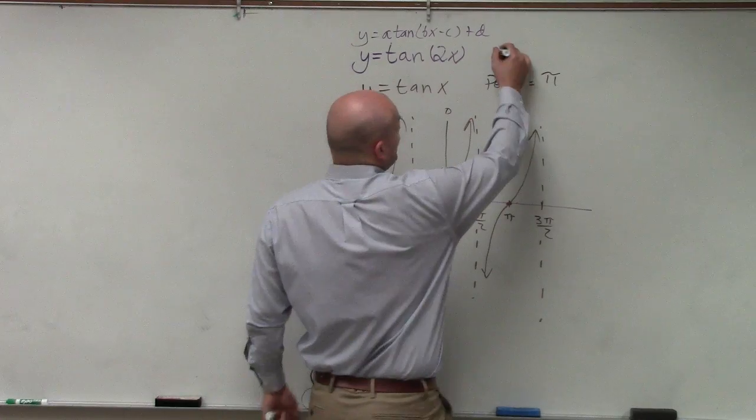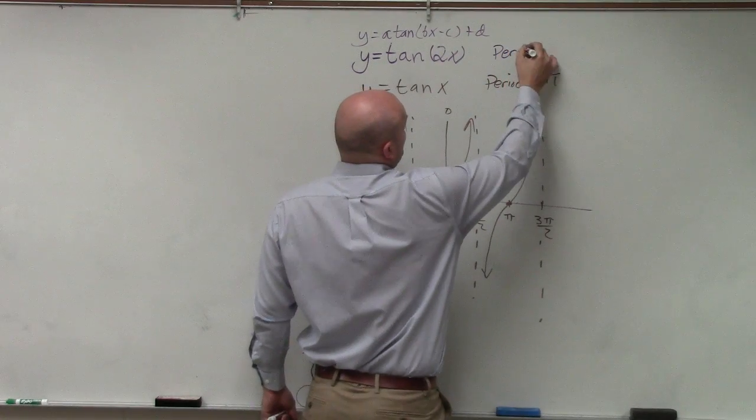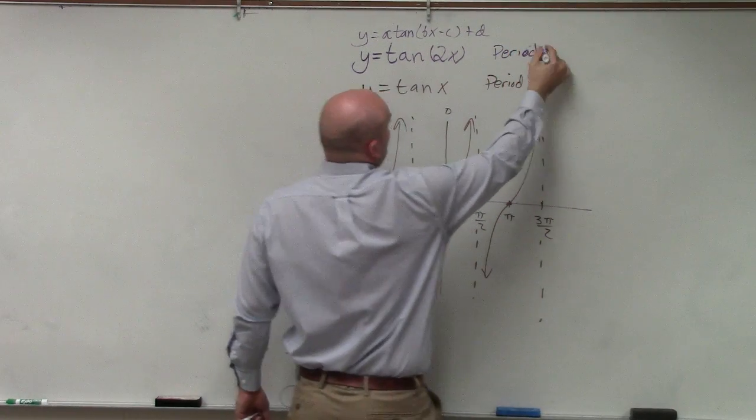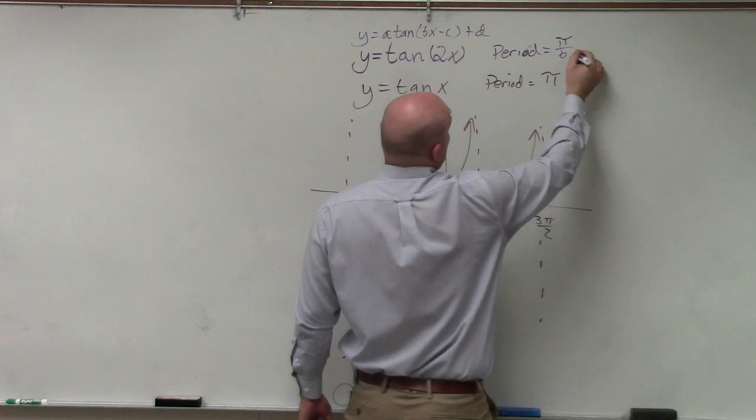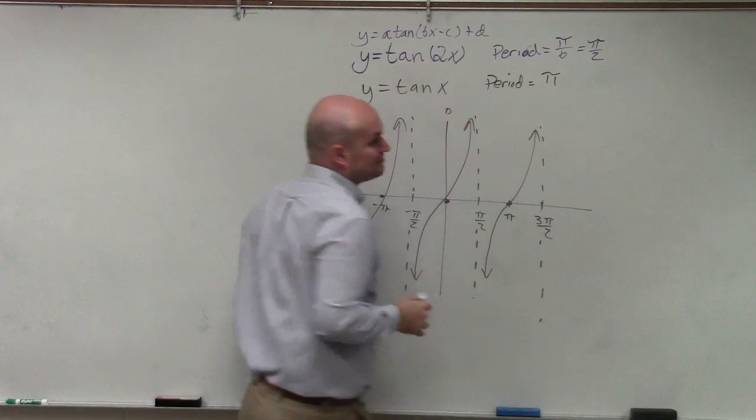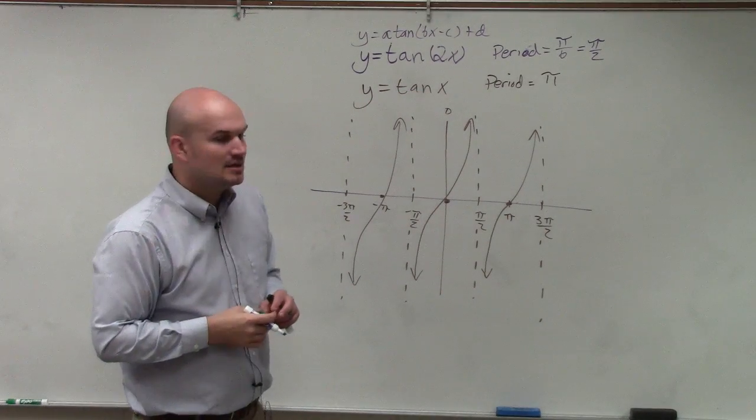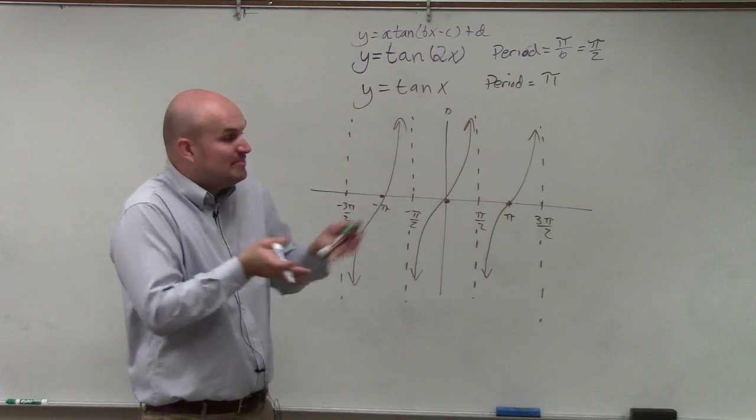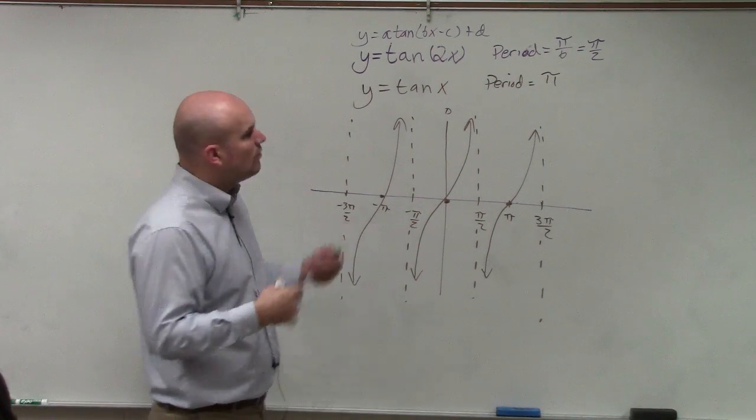The only thing that's different is I have a b. So remember that the period is pi divided by b, so my period is now pi halves. So instead of the period being pi, now my period is pi halves.